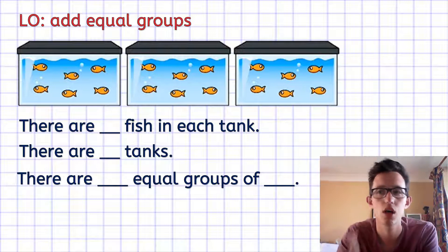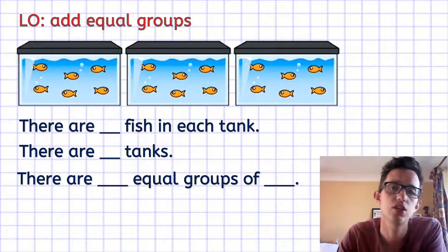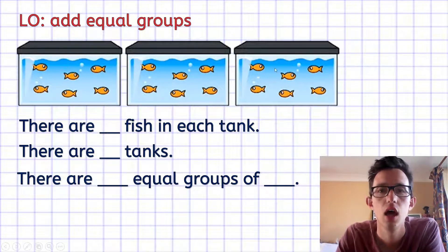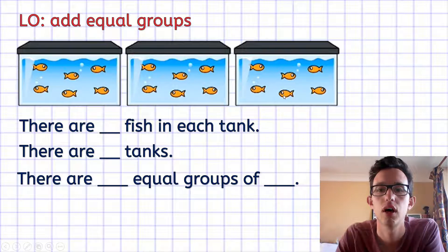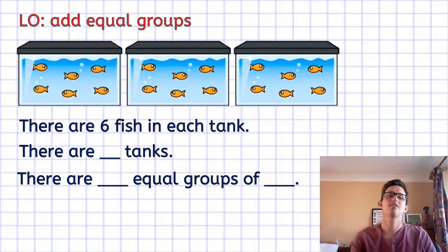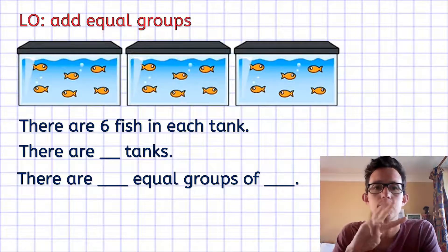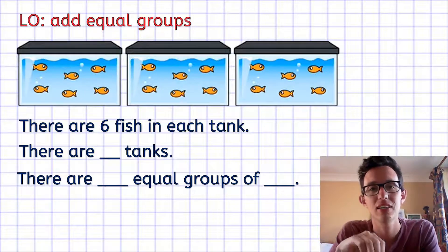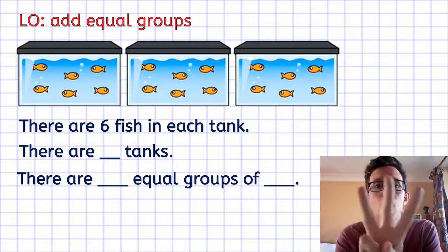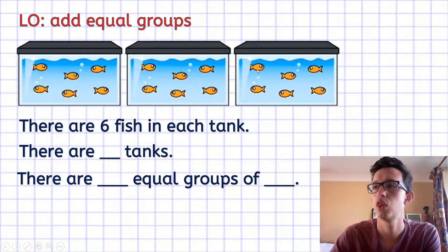The second one — we're only going to do two examples today. This one: there are how many fish in each tank? Let's pick this last tank and count the fish — one, two, three, four, five, six. There are six fish in each tank. How many tanks are there? Hold up your fingers — there are three tanks. One, two, three.